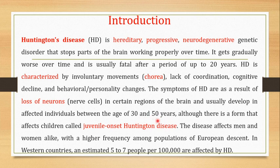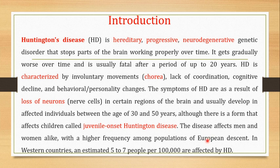Although juvenile onset Huntington's disease is a type of HD that affects children, most of the time HD is seen in individuals between the ages of 30 and 50 years. HD is an autosomal dominant genetic disease, so it affects men and women alike. There is a high frequency of HD in individuals of European descent. In Western countries, about 5 to 7 out of every 100,000 individuals are affected by HD.